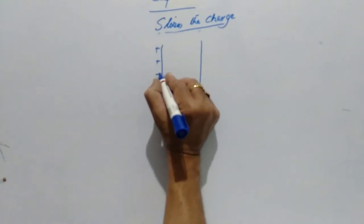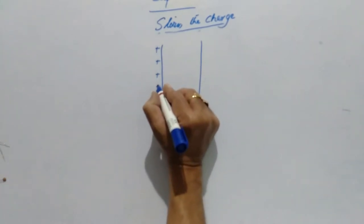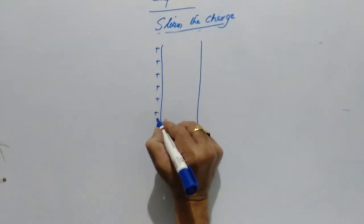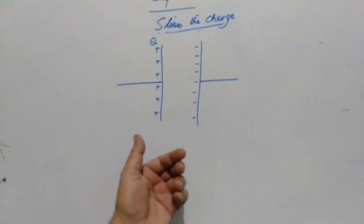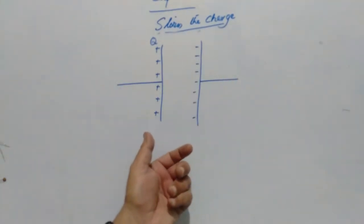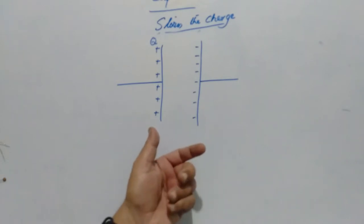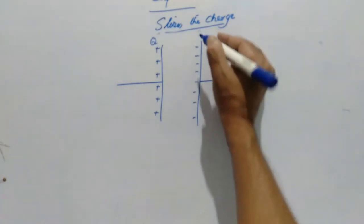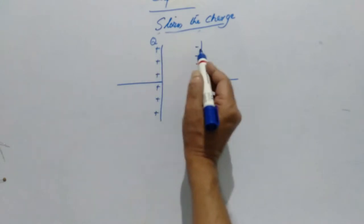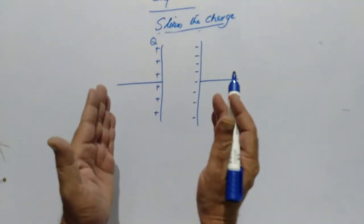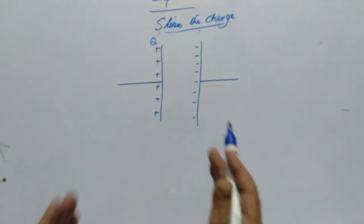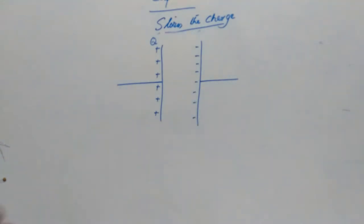Suppose I take a parallel plate capacitor with charge Q. What about the net charge on the capacitor? It is always zero because one plate has plus Q and the other has minus Q. But as they are apart from each other, it creates an electric field. That is the main principle behind capacitors.